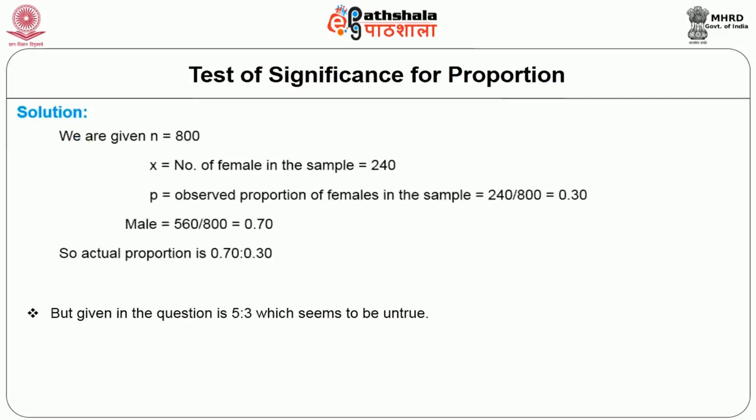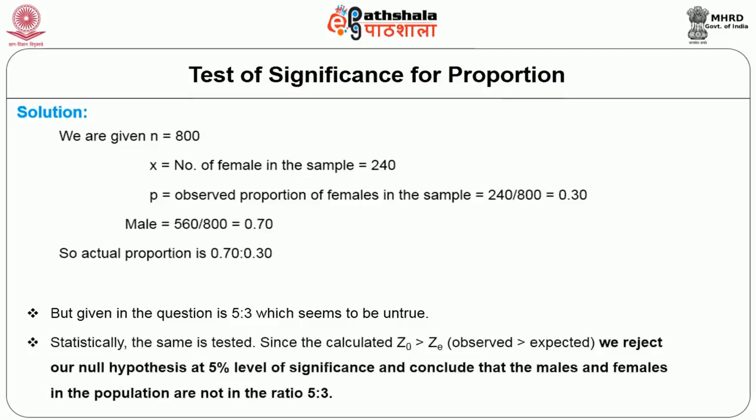What is given in the question is a ratio of 5:3, which common logic suggests is untrue. Statistically, since the calculated Z value is greater than the expected Z value, we reject the null hypothesis at 5% level of significance and conclude that the playing toys and showcase toys in the population are not in the ratio of 5:3.